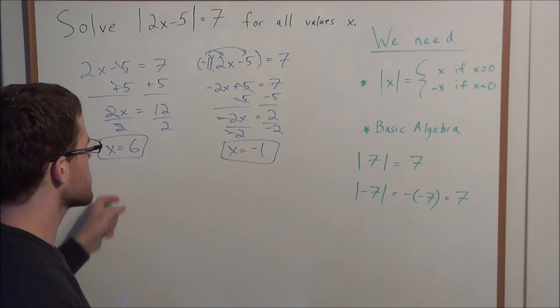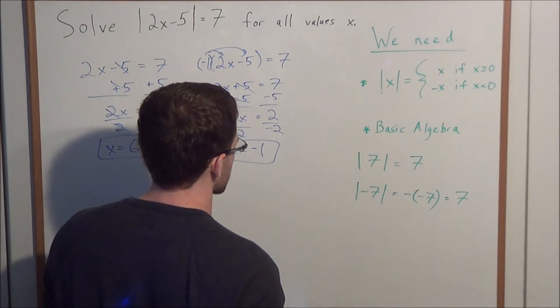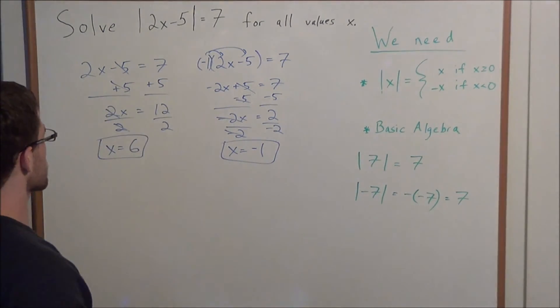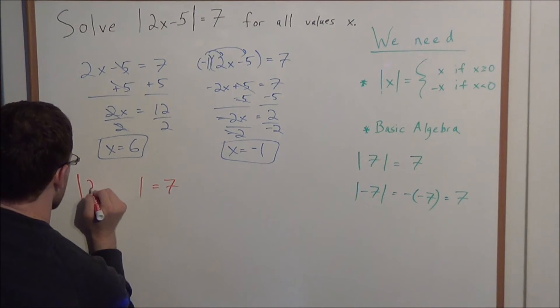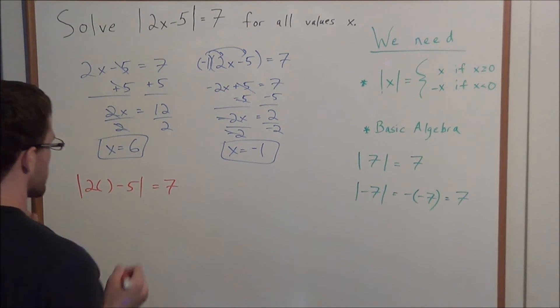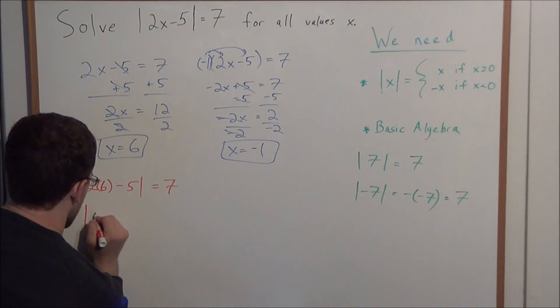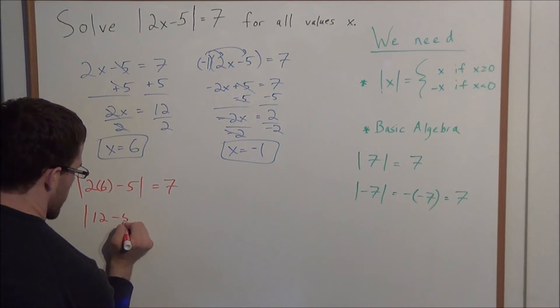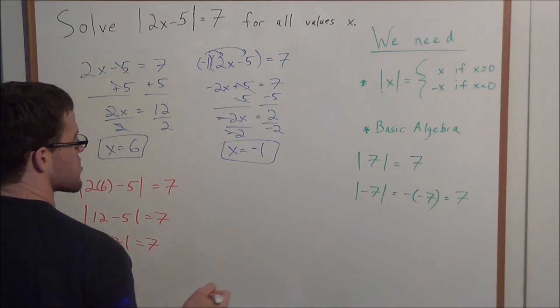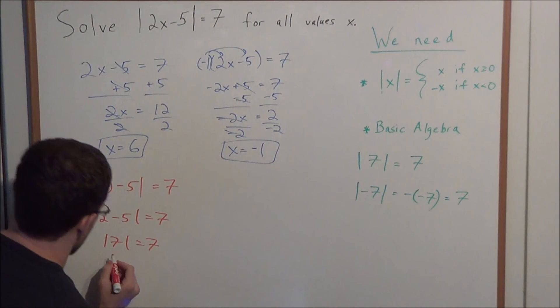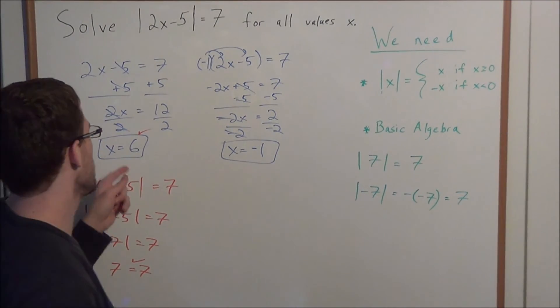And these are two potential solutions. And the reason why I say potential is because it's always a good idea to substitute back into the absolute value equation that you started with. So let's look at the absolute value equals 7. And we're looking at 2 times x minus 5. But keep in mind, this time x, we want to evaluate for x equals 6. So we're going to substitute, and 2 times 6 is 12. So we have the absolute value of 12 minus 5 equals 7, which gives us absolute value of 7 equals 7. And as we saw before, the absolute value of 7 equals 7. So we can even just say 7 equals 7, and that tells us that this value of x checks off. Definitely a solution.